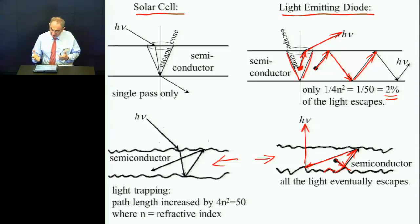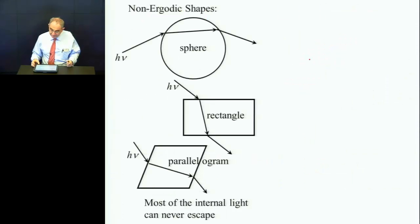However, if you play the same trick and texture one of the surfaces, the light ray, the internal light ray, randomizes in direction, gets kind of lost, but eventually bounces around. It may take quite a few bounces, but eventually it gets up. And so these types of LEDs are much more efficient. And in fact, virtually all LEDs are made this way now. And in fact, all solar cells are made this way now. It just took a little bit for people to catch on.